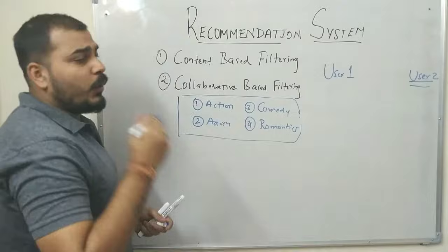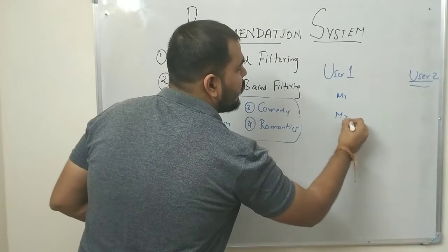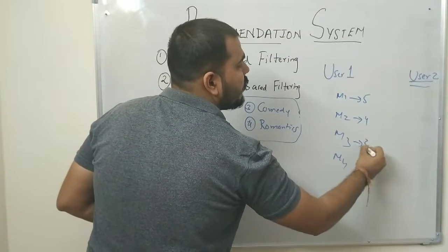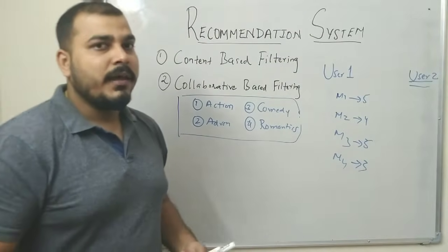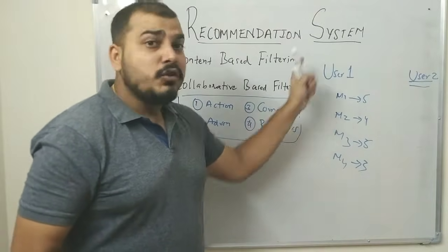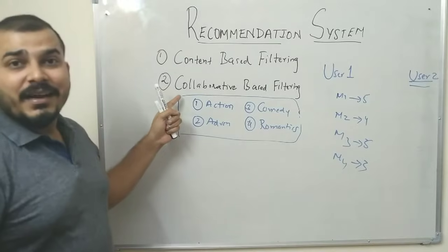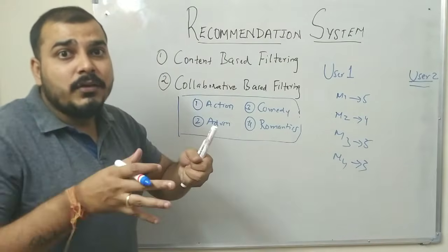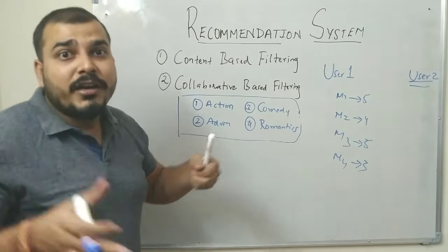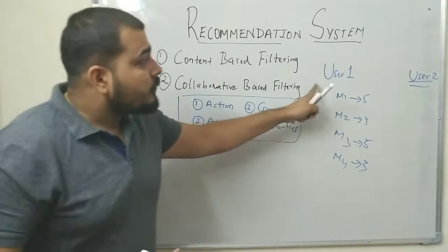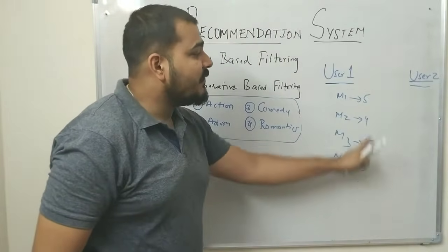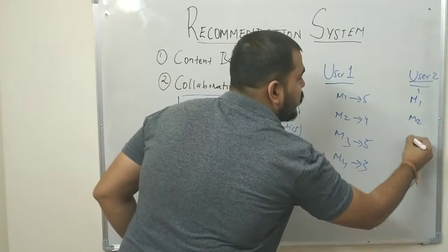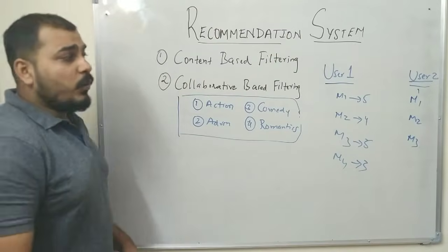Now let's understand collaborative-based filtering. Suppose User 1 has seen movies M1, M2, M3, and M4, giving ratings of 5, 4, 5, and 3 respectively. The term 'collaborative' means grouping multiple users based on their behavior and patterns. Similarly, User 2 has also watched M1, M2, and M3.